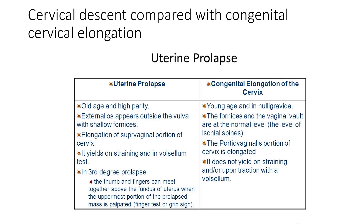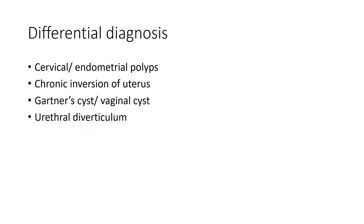In 3rd degree uterine prolapse, the thumb and fingers can meet together above the fundus. When 3rd degree prolapse happens, your fingers can meet above the level of the fundus, meaning all of the uterus has come down. If you feel a tubular-like structure, that is the uterine fundus, indicating 2nd degree uterine prolapse.